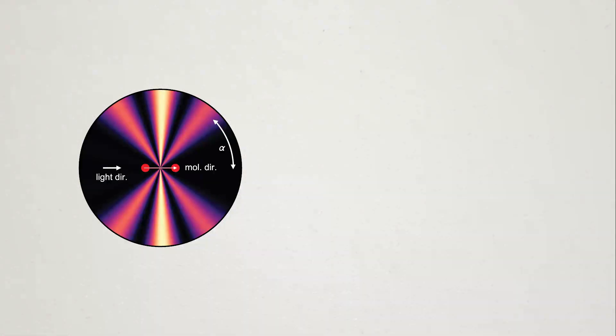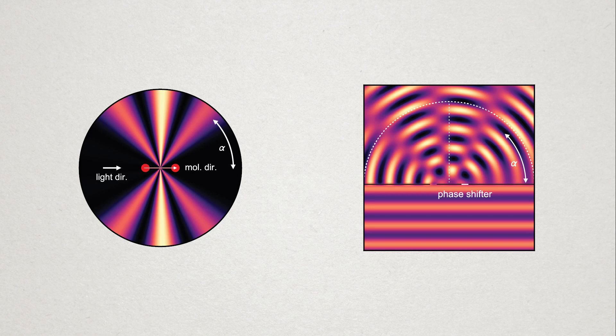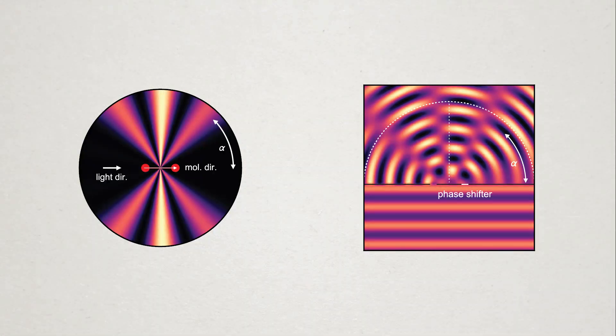Well, it turns out that this delay in emission is the same as a phase shift, which results in a shift in the interference pattern. This means that you can measure the time delay between the two electrons being emitted, simply by measuring the shift in the pattern.